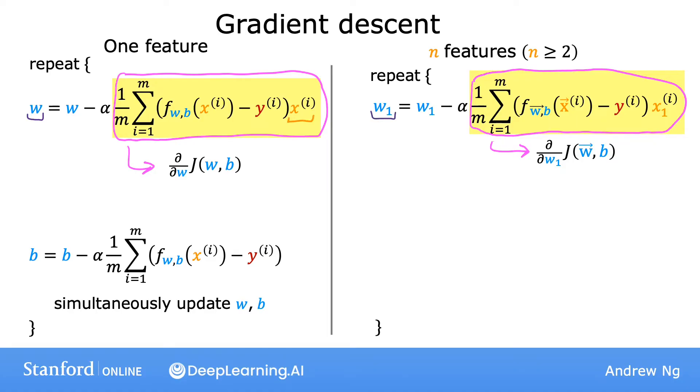And just as w on the left has now become w1 here on the right, xi here on the left is now instead xi subscript 1 here on the right. And this is just for j equals 1.